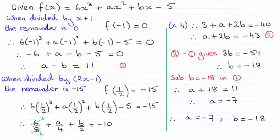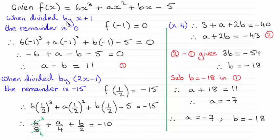Hi there. So for this question then, we were given f of x and told that when divided by x plus 1 the remainder is 0, and when divided by 2x minus 1 the remainder is minus 15. And we had to work out the values of a and b.